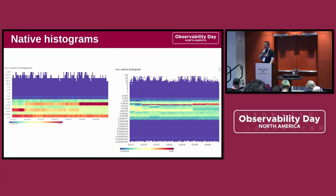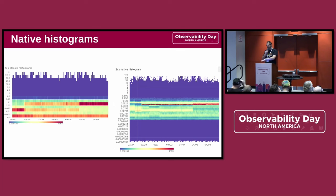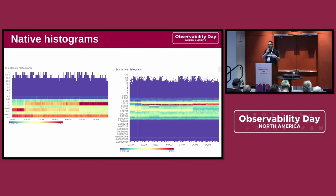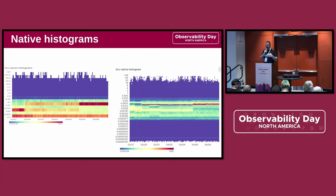First and foremost, we now really have native histograms — they really actually work. While previously histograms already worked nicely within Prometheus, you were kind of forced to know what you're doing to leverage them effectively. This often meant the cycle of figuring out the actual behavior, then choosing proper cutoffs or buckets for your histograms to get the maximum value.